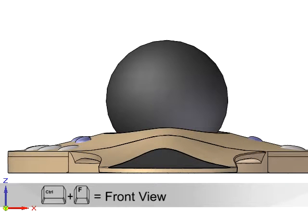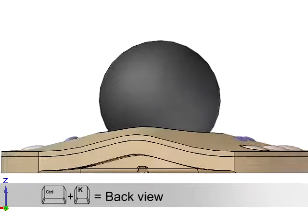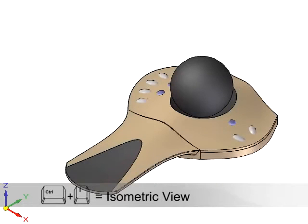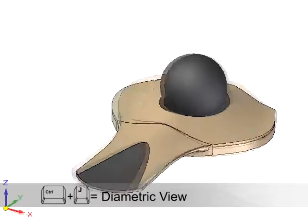Similarly, CTRL+F takes you to the front view. Because CTRL+B is already taken, CTRL+K takes you to the back view. To display an isometric view, press CTRL+I, and for a diametric view, CTRL+J.